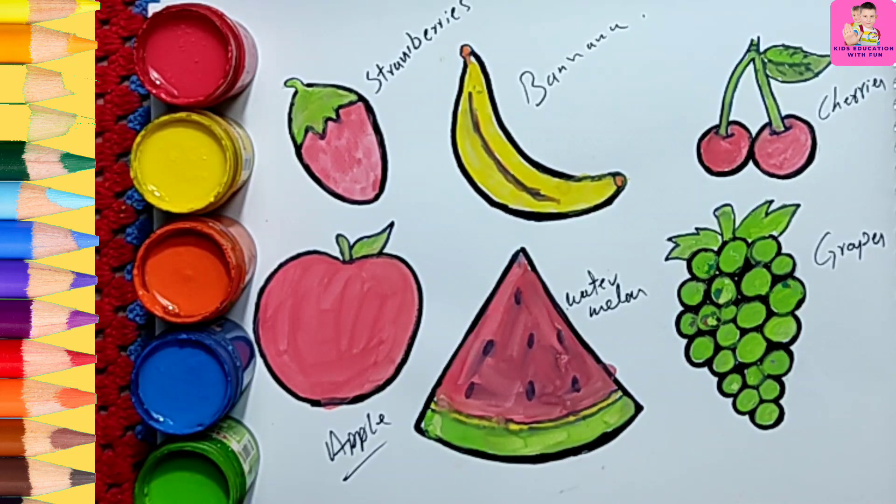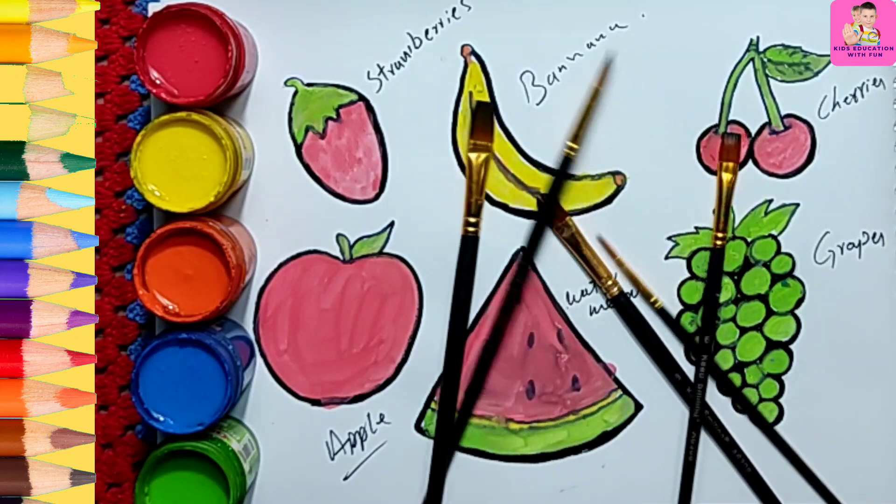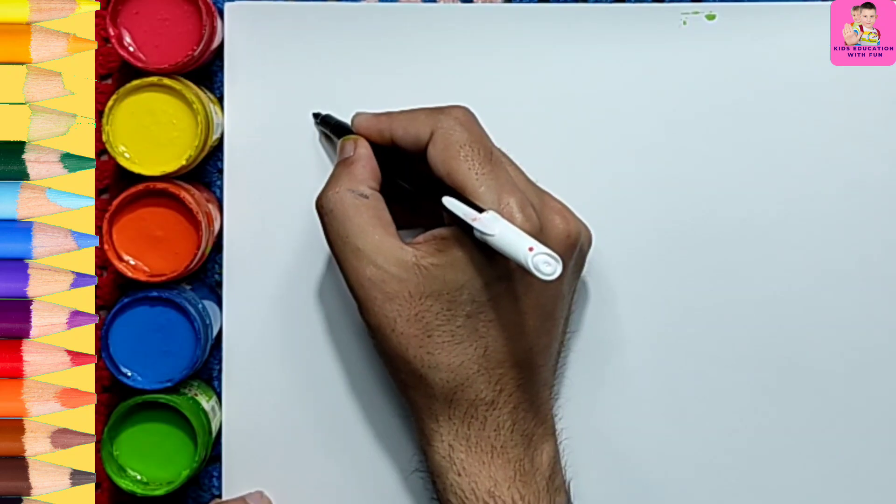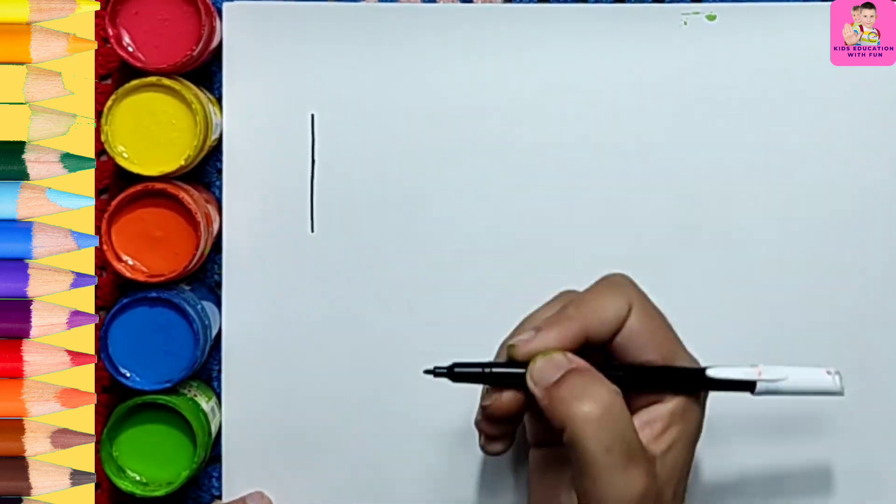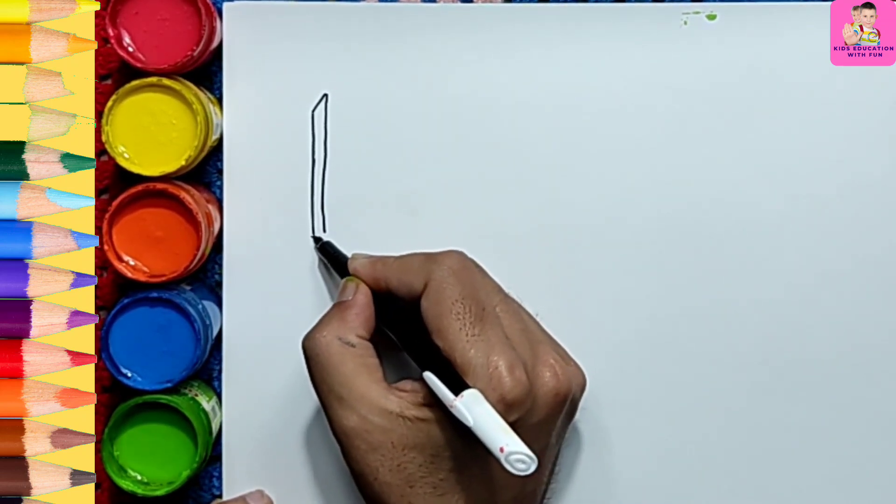In this video we will draw different pictures from numbers, like 1 - what can we make a picture from 1, and then from 2 up to 10. So let's start. The first number is 1.